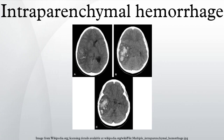Putamen involvement may present with contralateral hemiparesis, contralateral sensory loss, contralateral conjugate gaze paresis, homonymous hemianopsia, aphasia, neglect, or apraxia.